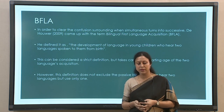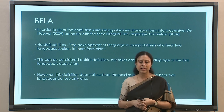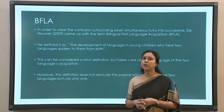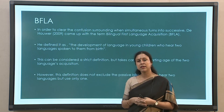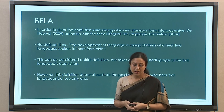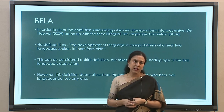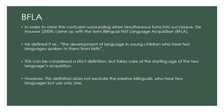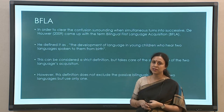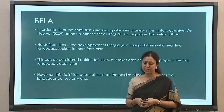Due to all of these different kinds of ideas floating around and different kinds of theories being put forward, De Houwer came up with a rather strict definition of simultaneous bilingualism. Trying to clear the confusion surrounding this, he came up with the idea of Bilingual First Language Acquisition (BFLA). He defined it as the development of language in young children who hear two languages spoken to them from birth. He is not taking a three-year or four-year boundary — he simply says the child should be exposed to two languages from birth in order to be considered a simultaneous bilingual.